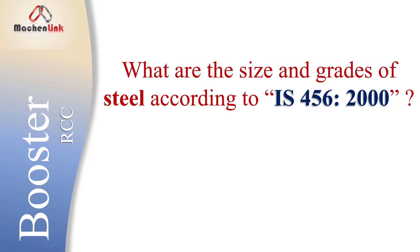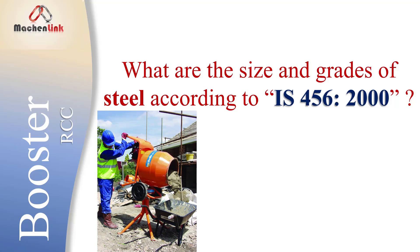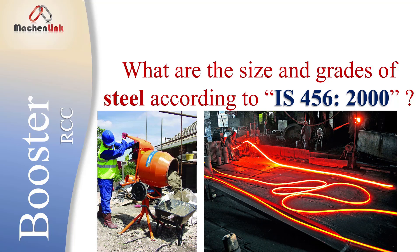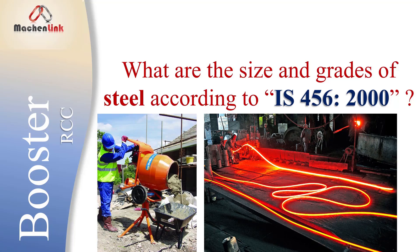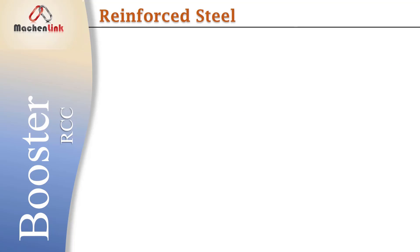Firstly, you have to understand that as compared to concrete, which is cast on site, steel is usually manufactured in factories under controlled conditions. Hence, quality control of steel is much easier and better than concrete. Mostly we use the term reinforcing bars, or shortly re-bars, to represent steel bars.